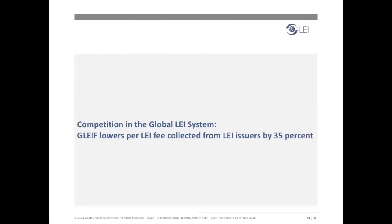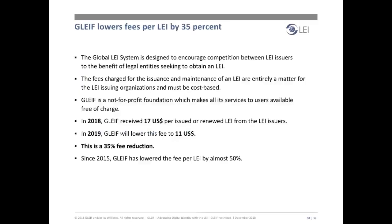Last but certainly not least, GLEIF continuously works towards further increasing competition in the global LEI system. The global LEI system is designed to encourage competition between the LEI-issuing organizations, to the benefit of legal entities seeking to obtain an LEI. The fees charged for the issuance and maintenance of an LEI are entirely a matter for the LEI-issuing organizations but must be cost-based. GLEIF is a not-for-profit foundation which makes all its services available free of charge, and provides complete transparency on the GLEIF funding model. In 2018, GLEIF received $17 per issued or renewed LEI from the LEI issuers. In 2019, GLEIF will lower this fee to $11 — a total 35% fee reduction. Since 2015, GLEIF has lowered the fee per LEI collected from the LEI issuers by almost 50%.